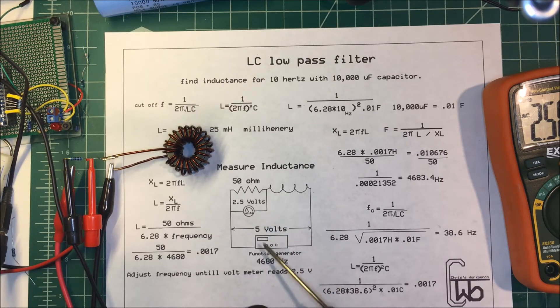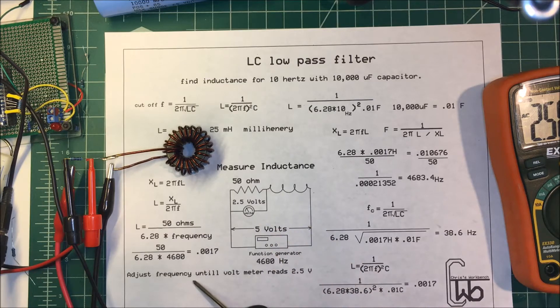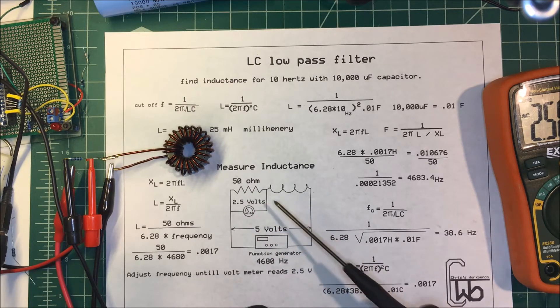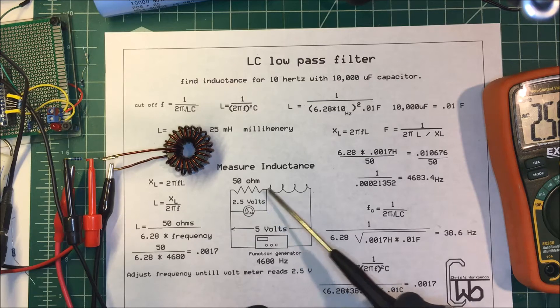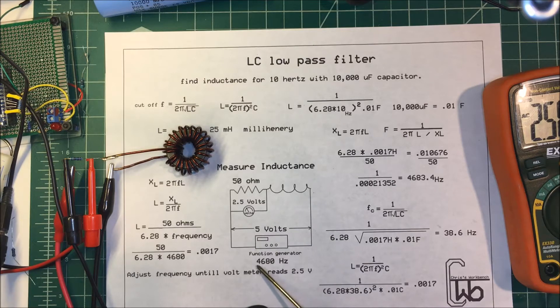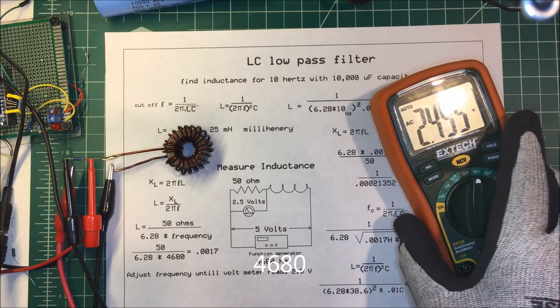I replaced this with the coil and adjusted the frequency until the voltmeter read 2.5 volts. At that point the voltage would be divided equally, and the inductive reactance of the core would be 50 ohms. That happened at 4,860 hertz. Here's my voltmeter and function generator.